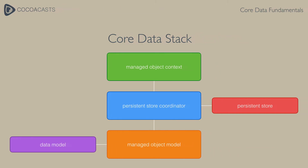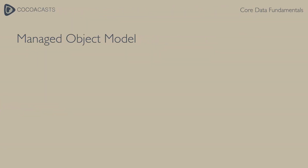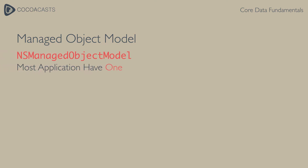This diagram shows how these classes relate to one another. We will use this diagram as a guideline during this lesson. The managed object model is an instance of the NSManagedObjectModel class. A typical Core Data application has one instance of this class, and it represents the data model of the Core Data application.